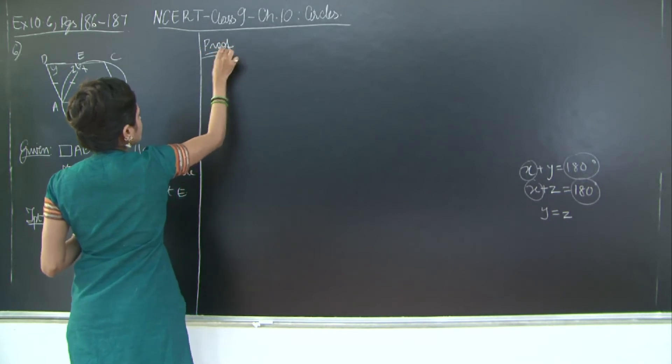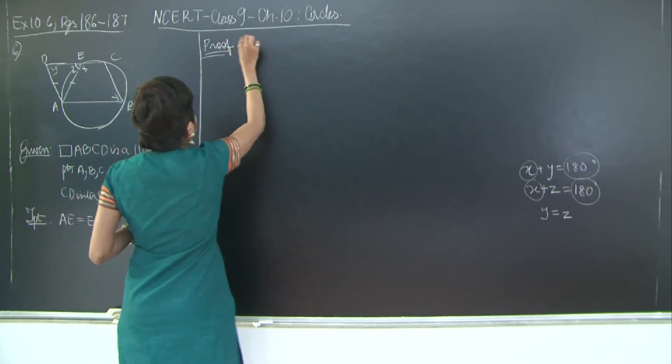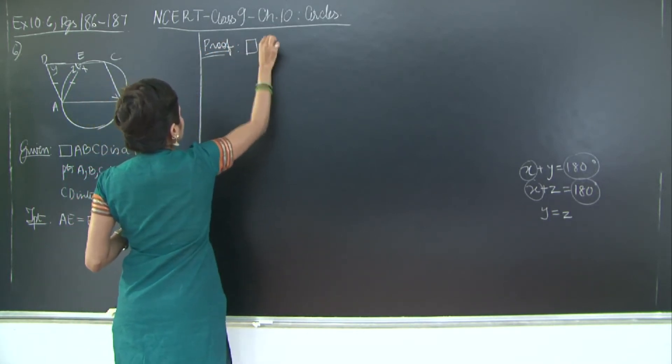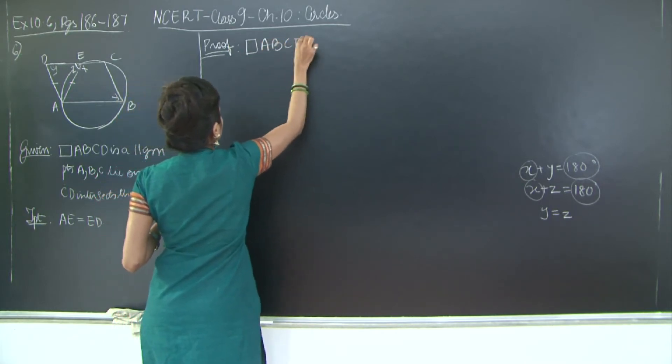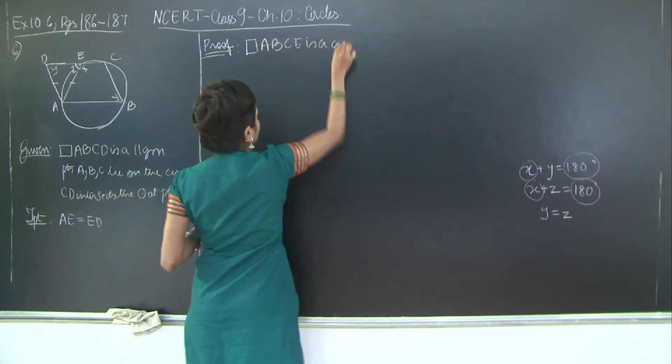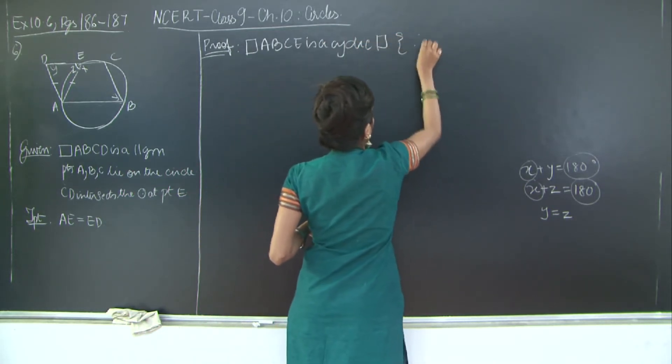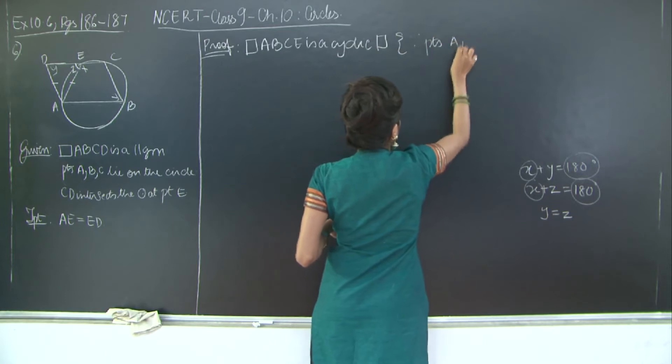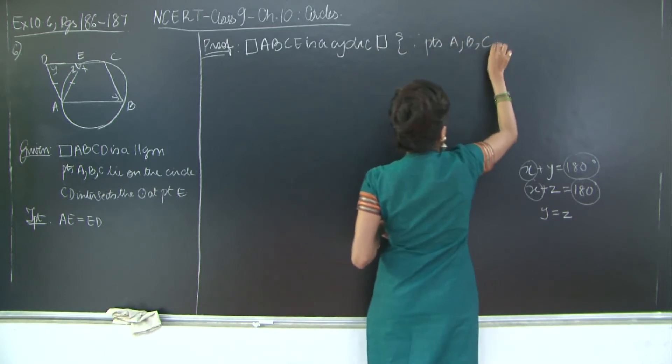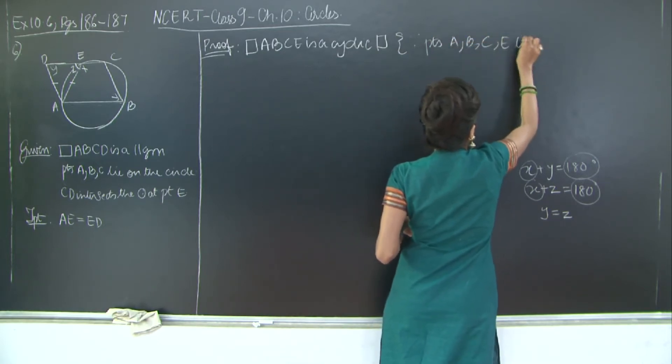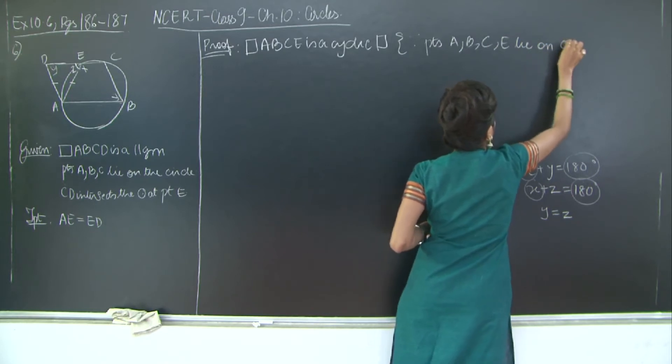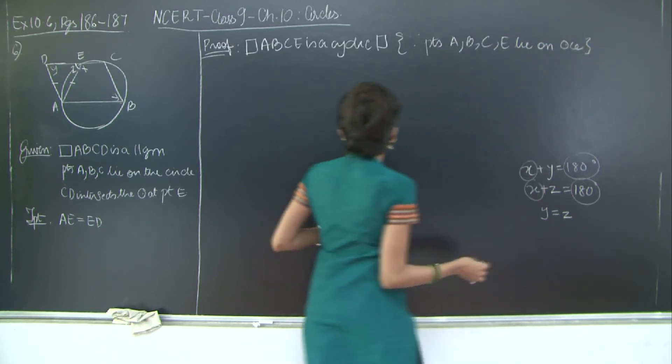So I will say proof. Quadrilateral A, B, C, E is a cyclic quadrilateral since points A, B, C and E lie on circumference. Right?